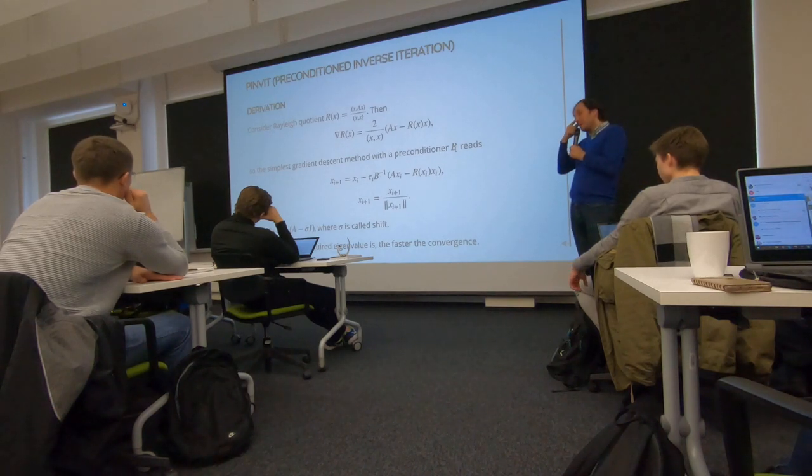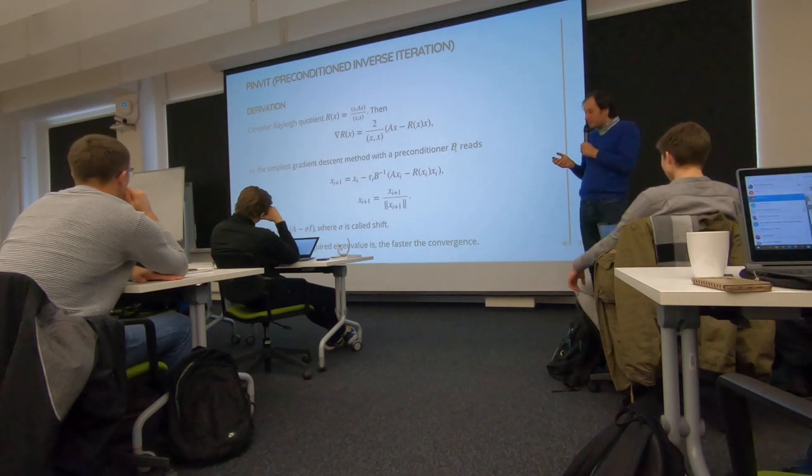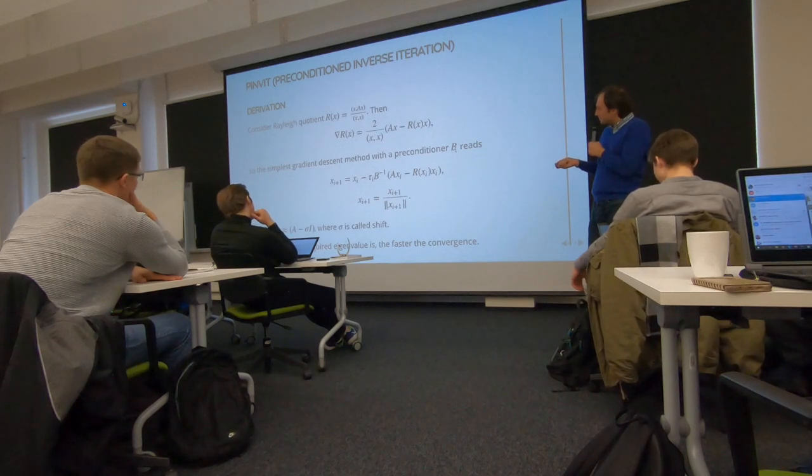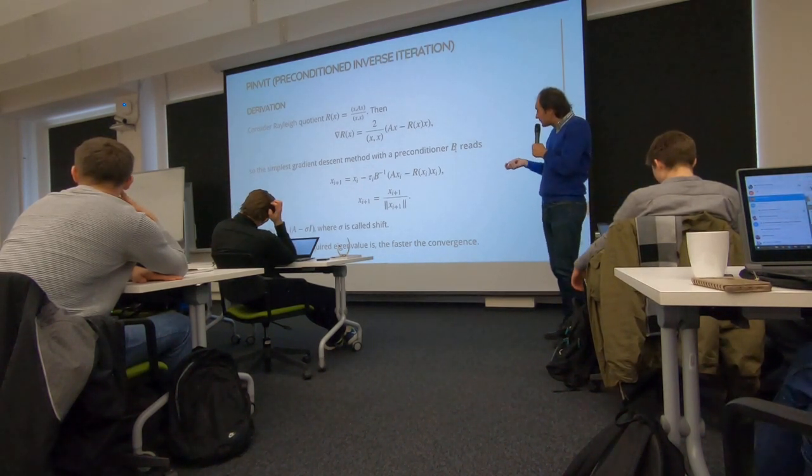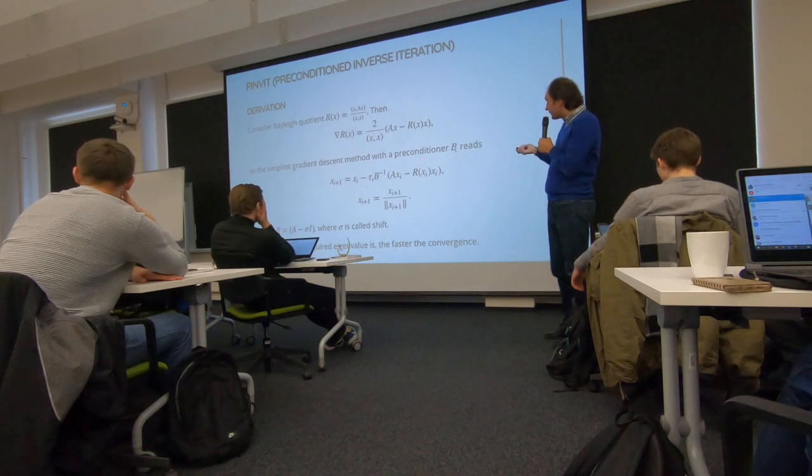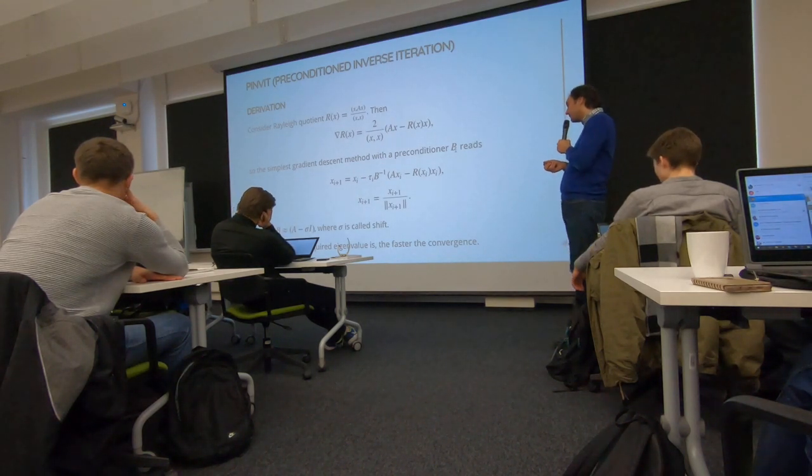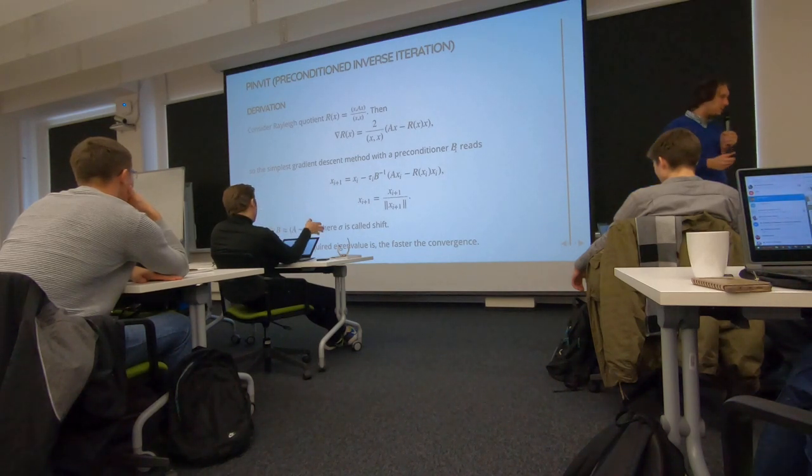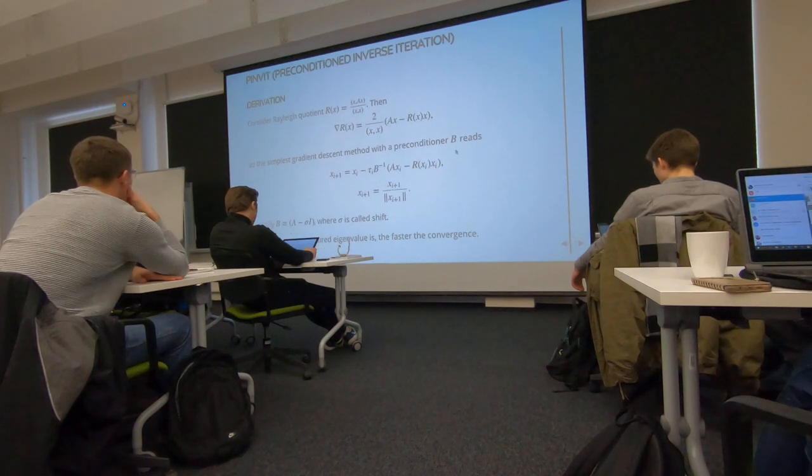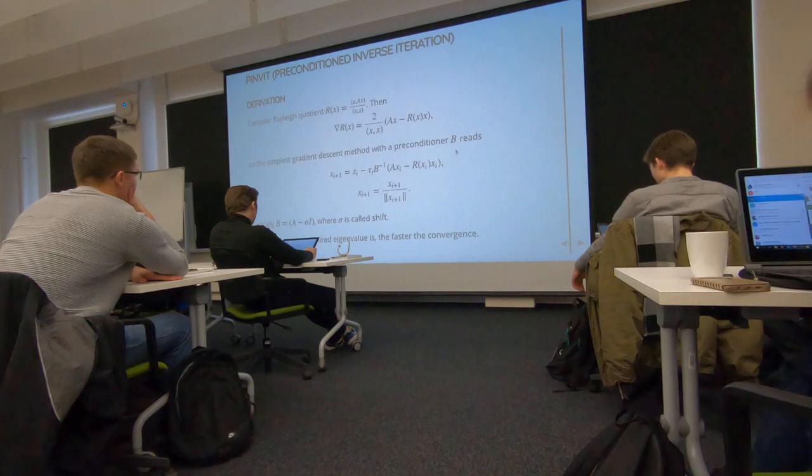The gradient method converges if our direction is a good descent direction. We can put here, for example, a shifted matrix. But we can solve this linear system inaccurately. These two simple formulas, this is just preconditioned inverse iteration. And actually, if you have a reasonable approximation to the minimum eigenvalue, to the desired eigenvalue, it can converge quite fast.